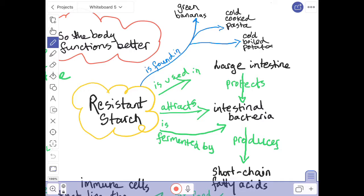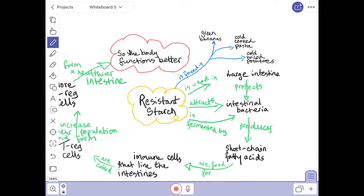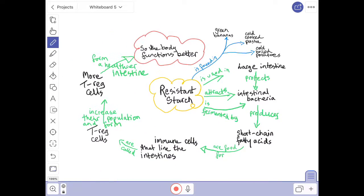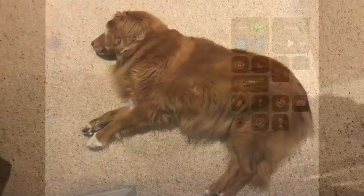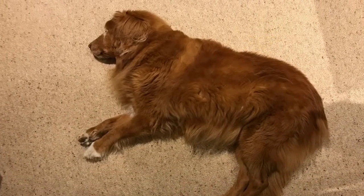And another place you can find resistant starch is in cold boiled potatoes. So you can add to this and doing a concept map like this just can lead to more questions and more critical thinking. But this is enough for now to give you the idea that a concept map helps you tie together descriptions so that then you can explain how something works.